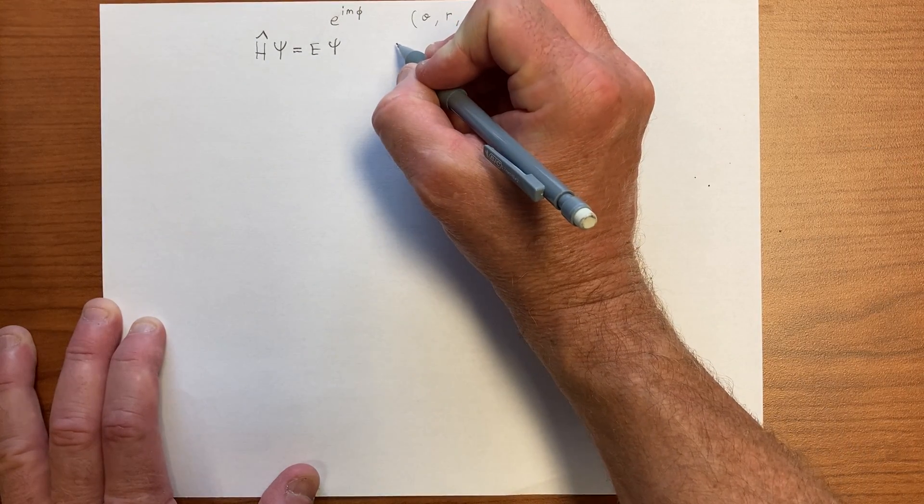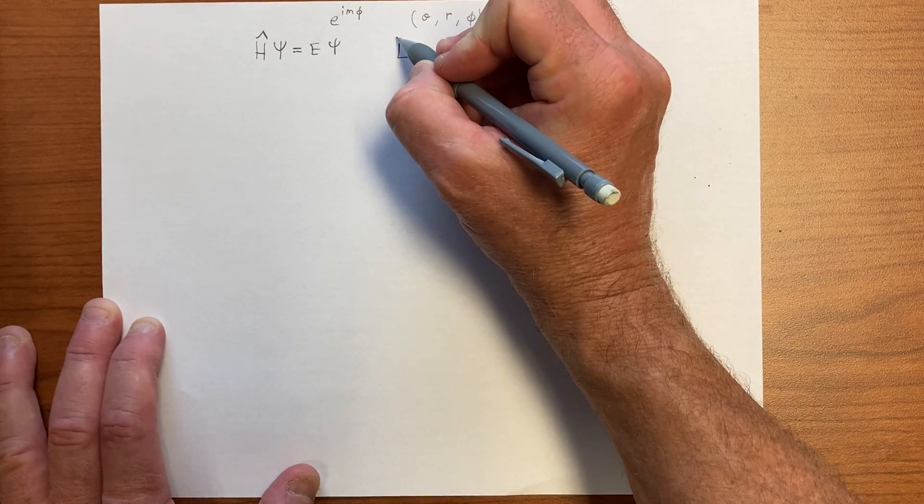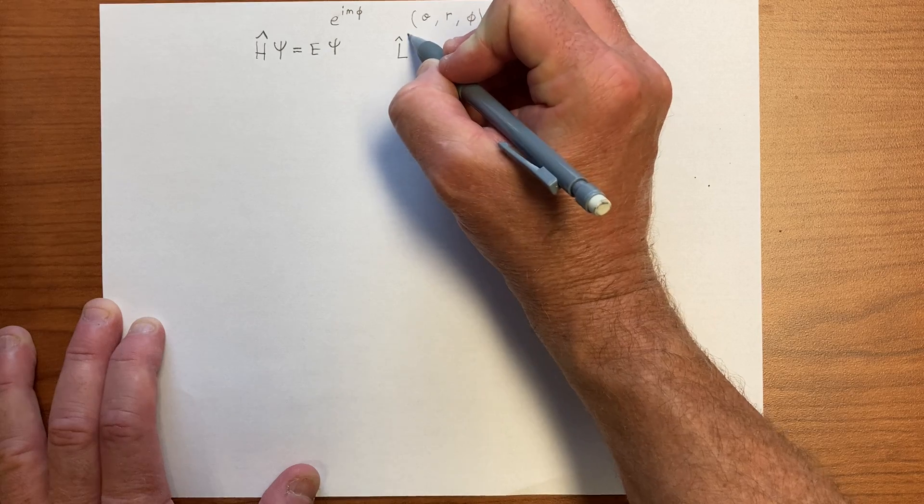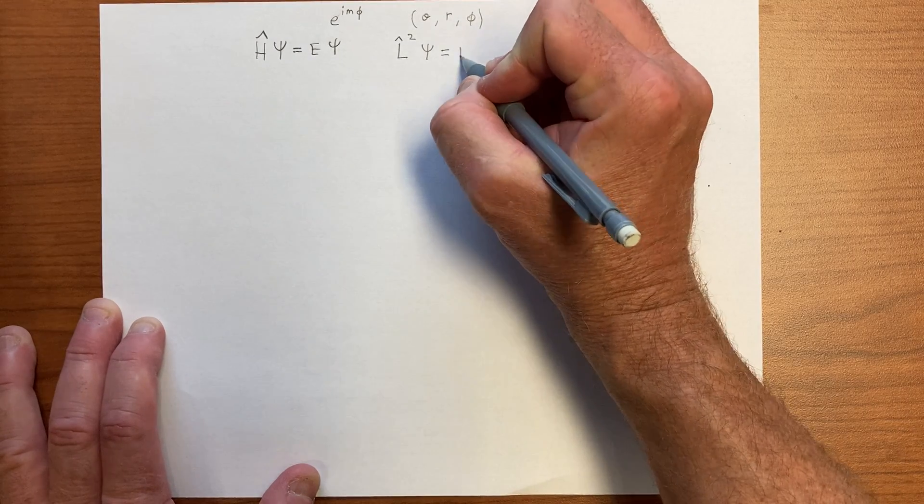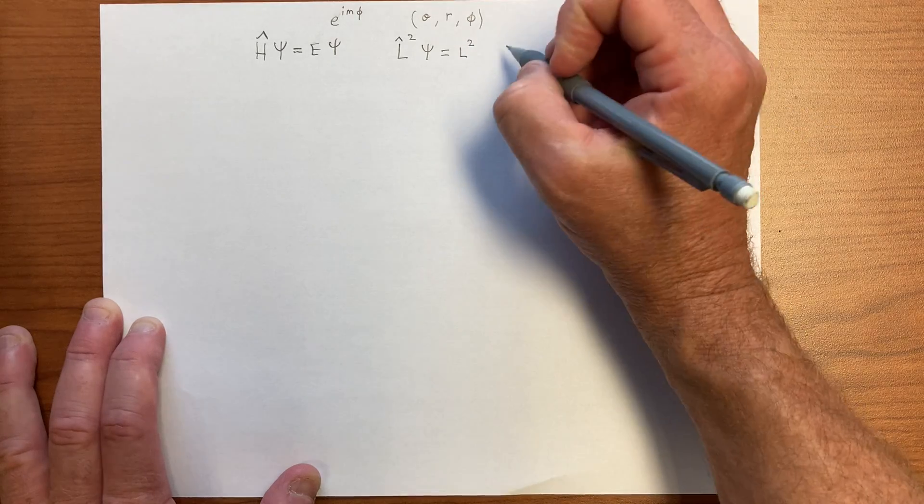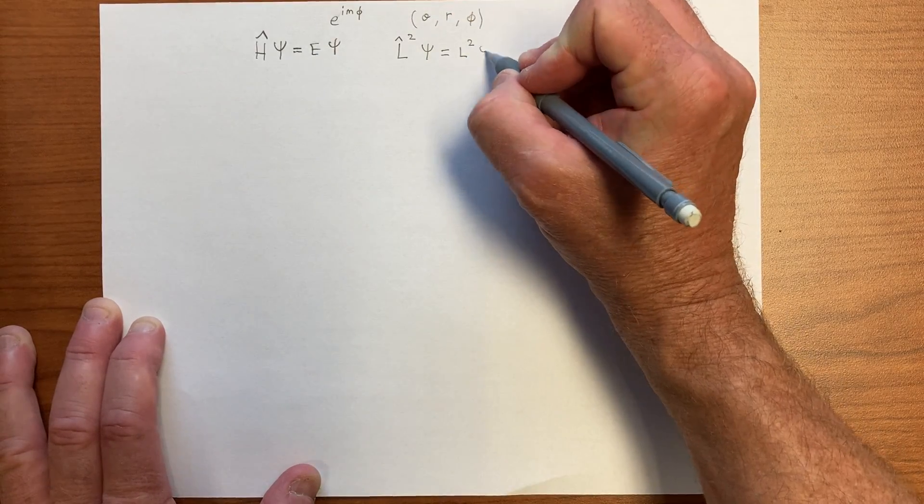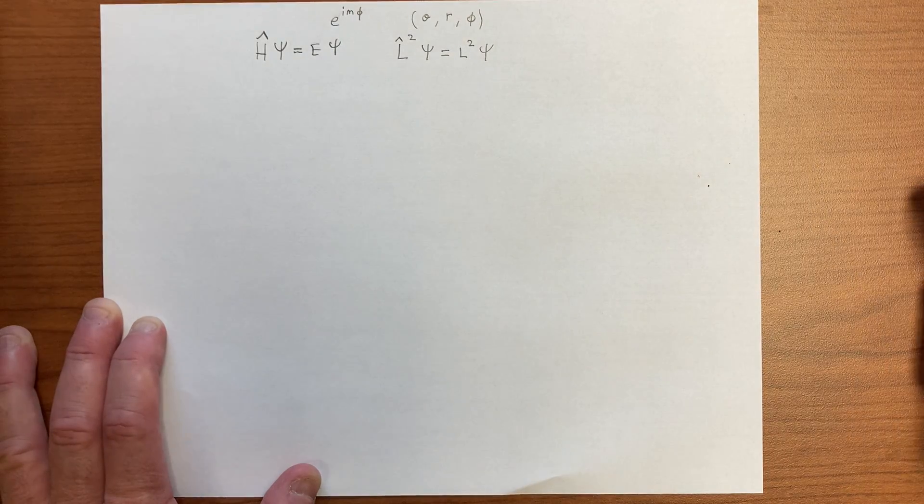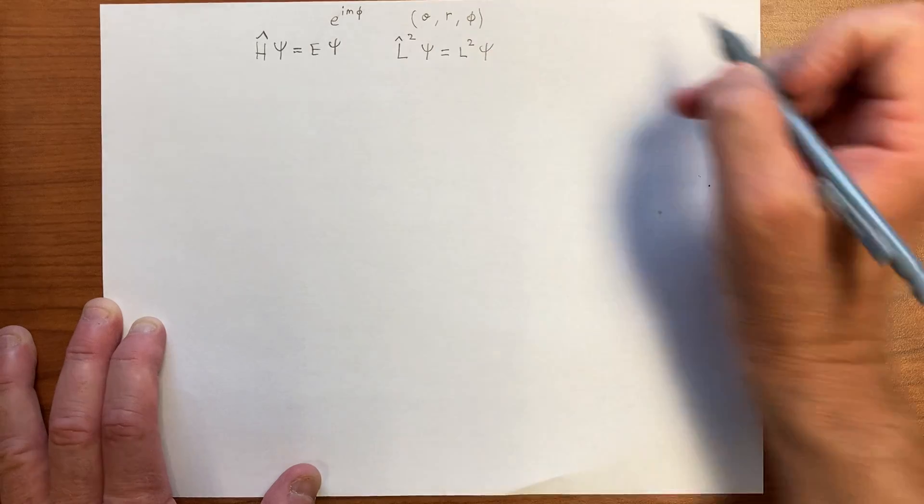We'll also find that these are eigenfunctions of, so in the theta part, we'll end up getting an L squared operator, so we'll be doing something like some L squared value, so here we have an energy, here we have an angular momentum squared, psi, and so these will also be eigenfunctions of that operator.